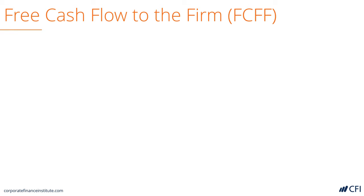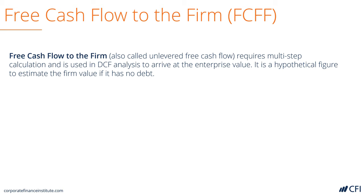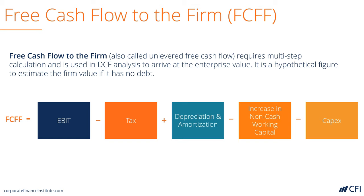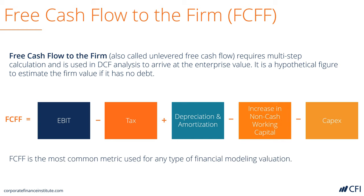And now free cash flow to the firm — this is the unlevered free cash flow of the business. It requires the most work to calculate and tells us how much cash flow a company would generate without considering its capital structure, meaning if it was completely equity financed. Instead of starting at net income, this formula starts at earnings before interest and taxes, then calculates an unlevered tax bill — taxes will be higher because no interest is deducted. This number is also called NOPAT, or net operating profit after taxes. From there, we add back D&A, adjust for increases in non-cash working capital, and deduct capital expenditures. This metric is most commonly used in valuation modeling as it gives us the enterprise value of the business without considering its capital structure and after everything is accounted for.